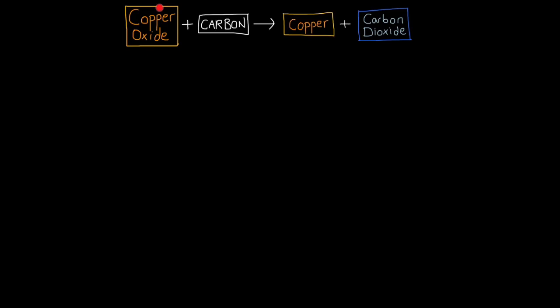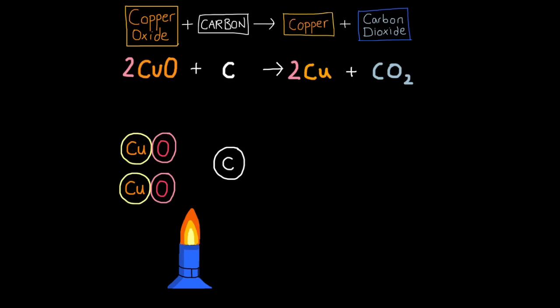So this is an example of where we can show oxidation and reduction in a way that extracts copper from copper oxide. Here, copper oxide is going to react with the more reactive element, carbon, to produce copper and carbon dioxide. Here's the balance symbol equation. So we have two molecules of copper oxide. Remember, the large number here means how many molecules. We're reacting with carbon to produce two atoms of copper and a molecule of carbon dioxide.